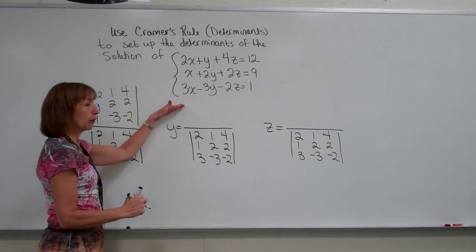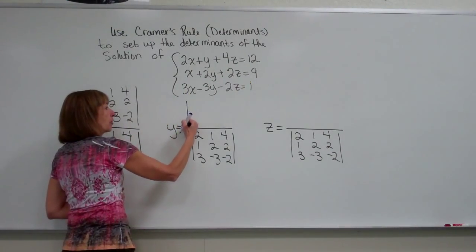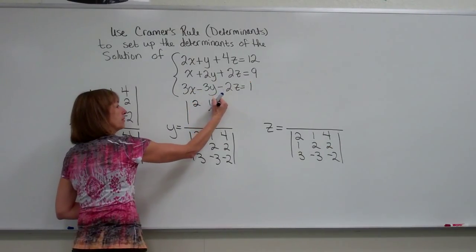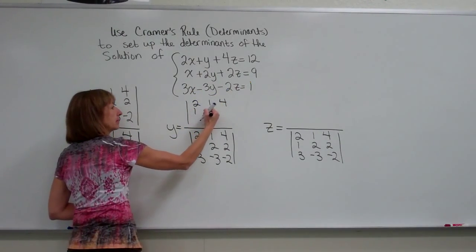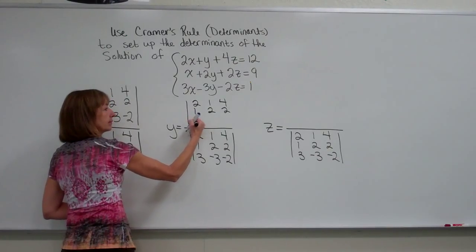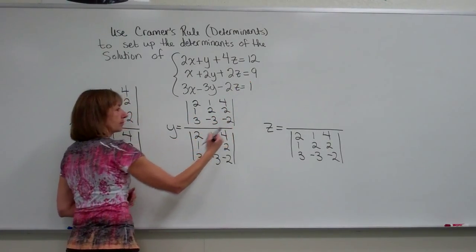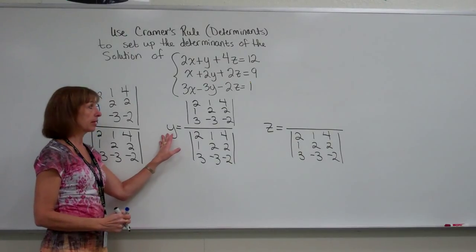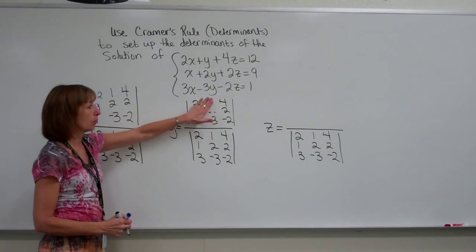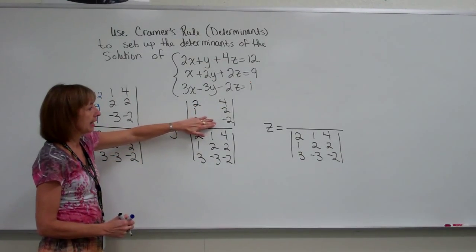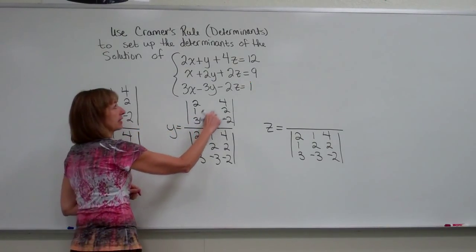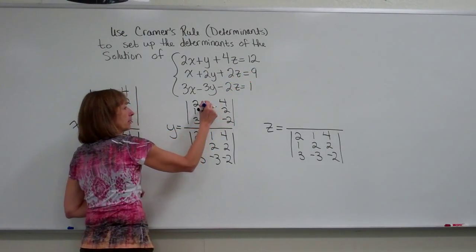For the numerator for y, again, I'm going to copy the determinant from the denominator. For y's numerator, I'm going to erase out the coefficients of y and replace it with the constants, 12, 9, and 1.